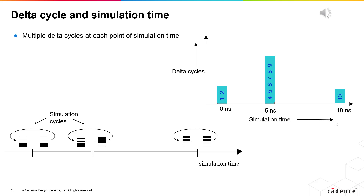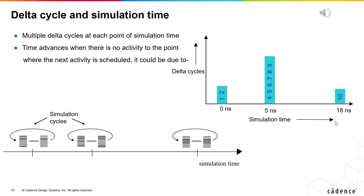At each point of simulation time there can be multiple delta cycles. When no more signals need updating and no more processes need executing, the simulator is free to advance simulation time until the next scheduled activity is found. A scheduled activity may be the assignment of a signal at a future point in time. This is done by attaching an after clause to a signal assignment. The after clause delays the assignment until the simulator has advanced by the required time. After clauses are never used in RTL code as they are non-synthesizable, but are used in behavioral test benches and gate-level timing models.